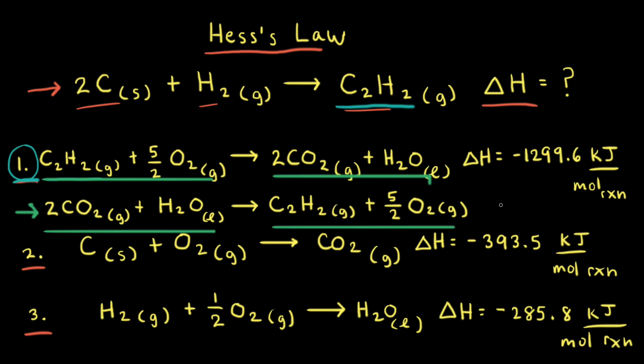The change in enthalpy for equation one is negative 1299.6 kilojoules per mole of reaction — kilojoules per mole of reaction just means how the reaction is written in the balanced equation. Since we've reversed equation one, we also need to reverse the sign for delta H. So instead of this being a negative, we're going to change it into a positive. Let's also cross out the first equation so we don't get confused.